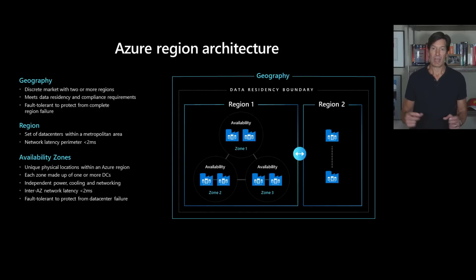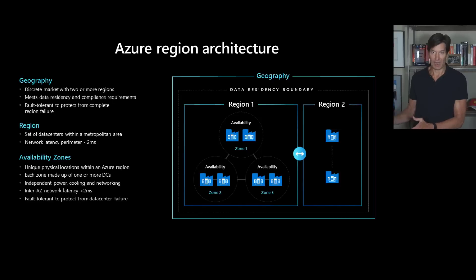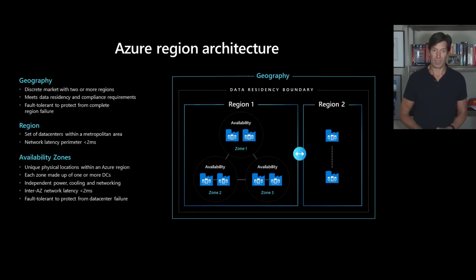Within a geography, we strive to have two regions. The reason we have two regions is so you can build a disaster recovery solution on top of Azure, where large-scale disasters — either software, hardware, or environmental — that impact one region and might take it down, you can survive by migrating your workloads or serving traffic from the other paired region within the same geography. Those pairwise regions are usually hundreds of miles apart so they can survive large-scale hurricanes, earthquakes, or floods.